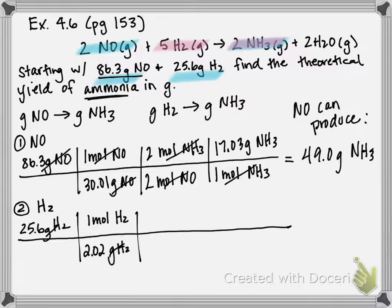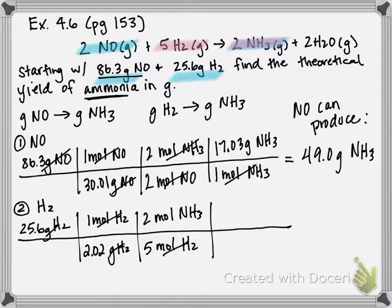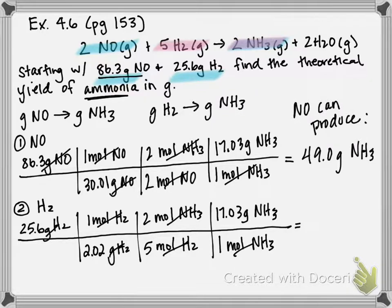On the bottom I put 5 moles of H2, and on top — what I'm trying to get to — 2 moles of NH3. Moles of H2 cancel, and I multiply by the molar mass to get to grams of NH3: one mole of NH3 contains 17.03 grams. Multiplying across and dividing on the bottom, I get 86.3 grams of NH3 — so H2 can produce that amount.